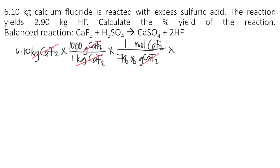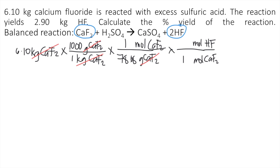Then we convert the moles of CaF₂ into moles of HF. We look at the balanced chemical reaction and find the ratio between CaF₂ and HF. From the balanced reaction, there is 1 CaF₂ and 2 HF — so for every 1 mole of CaF₂, it produces 2 moles of HF. The moles of CaF₂ cancel out and now we have moles of HF.